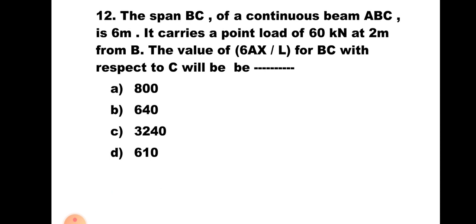Question number 12. The span BC of a continuous beam ABC is 6 meter. It carries a point load of 60 kilonewton at 2 meter from B. The value of 6AX̄/L for BC with respect to C will be: A. 800, B. 640, C. 3240, D. 610. Here it is the second span, so take X̄ from the right end using X̄ = (L + B)/3. Applying all values gives 800. Hence the correct answer is A, 800.